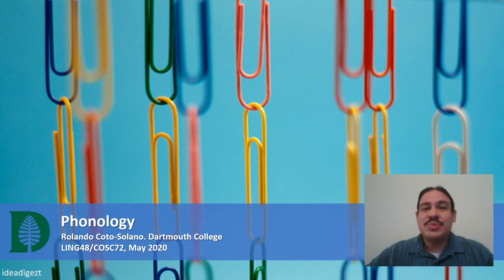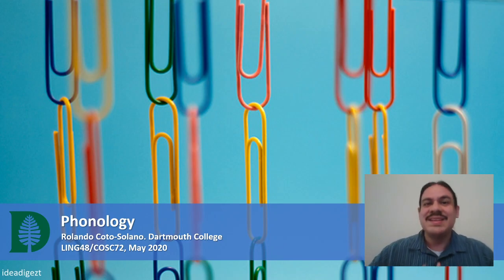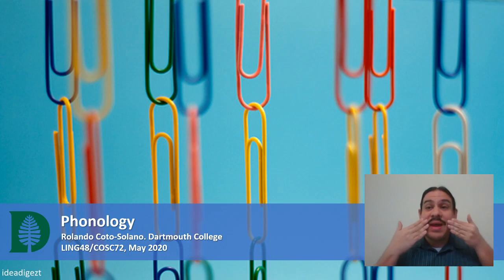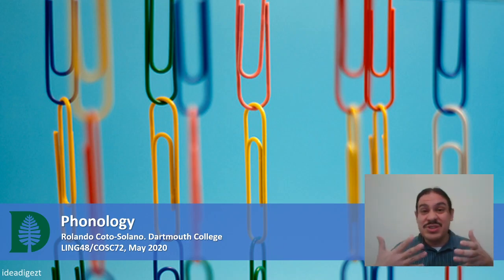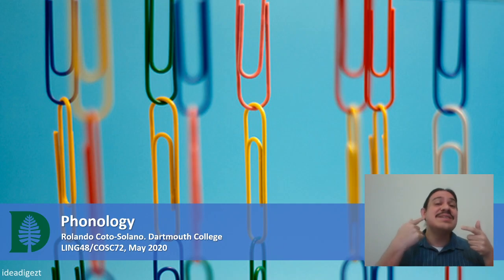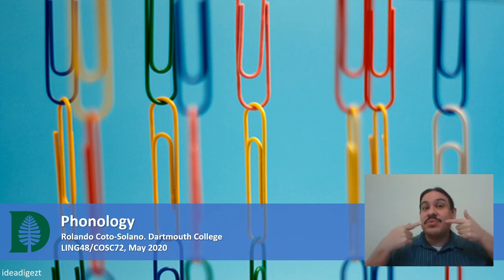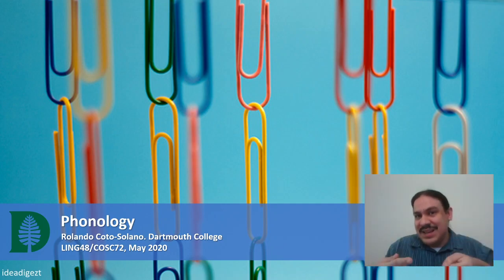In the last two videos we looked at phonetics and how we can use different parts of our mouth to produce the sounds of human language. We have different articulators like lips, tongue, and vocal cords, which produce the sounds of our languages.